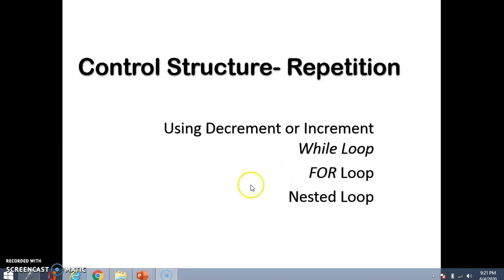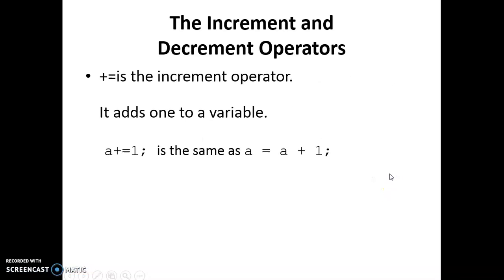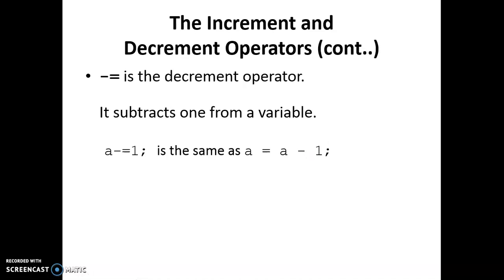This video explains repetition control structures using increment and decrement. The increment operator is `+=`, which adds one to a variable — so `a += 1` is the same as `a = a + 1`, and `a += b` is the same as `a = a + b`. The decrement operator is `-=`, which subtracts from a variable — so `a -= 1` is the same as `a = a - 1`.